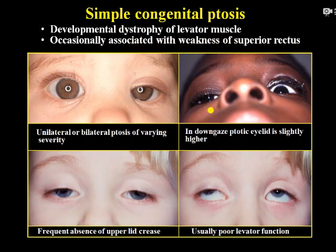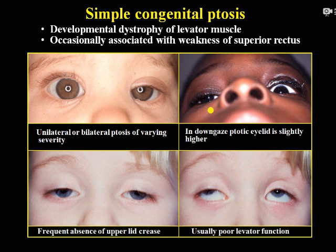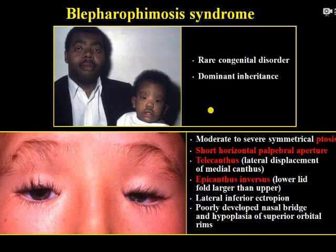Simple congenital ptosis is defined as an abnormally low position of the eyelid with respect to the globe, occurring at birth or soon after. It can be classified as primary — due to levator maldevelopment — or secondary, which can be neurogenic, myogenic, aponeurotic, or mechanical. Blepharophimosis syndrome is a rare cause of congenital ptosis with autosomal dominant inheritance.